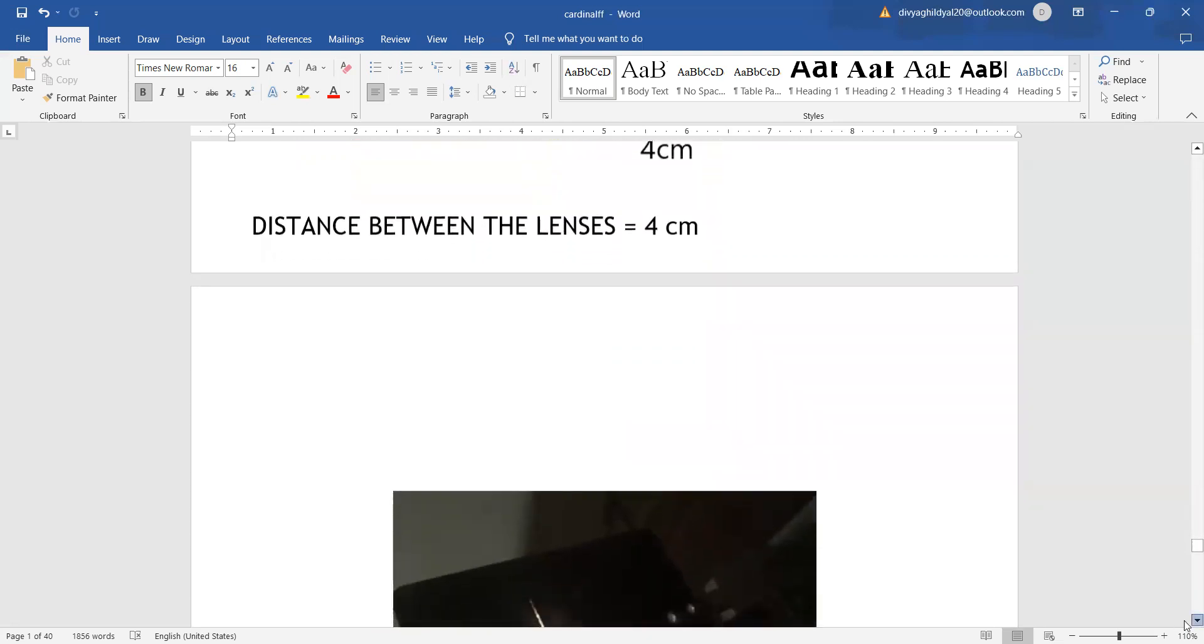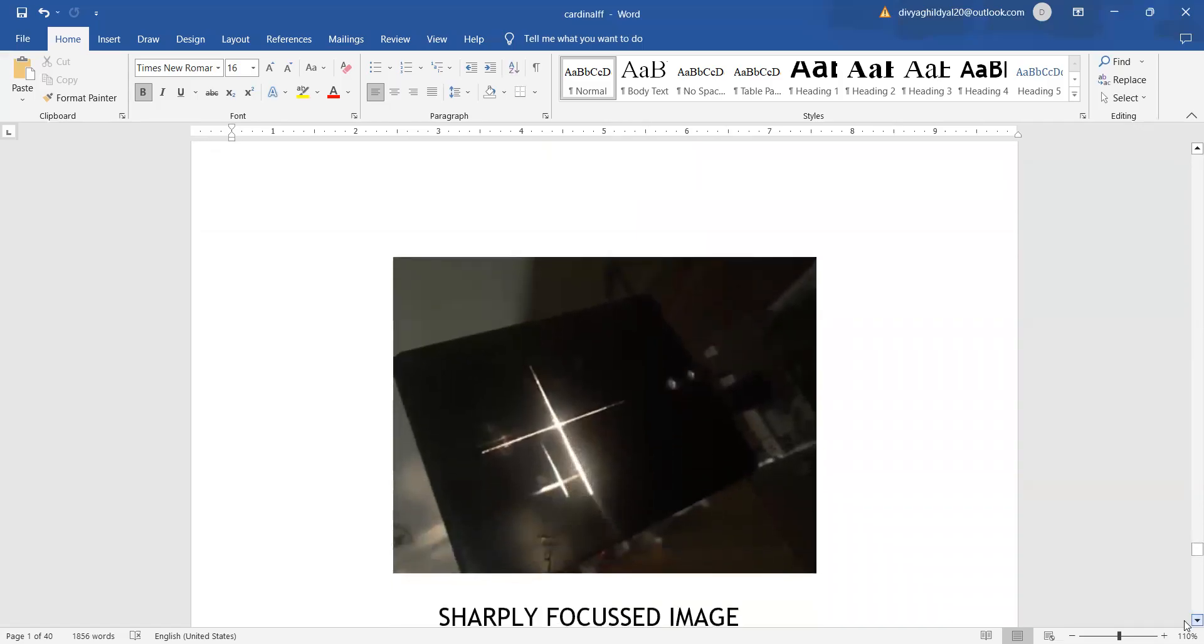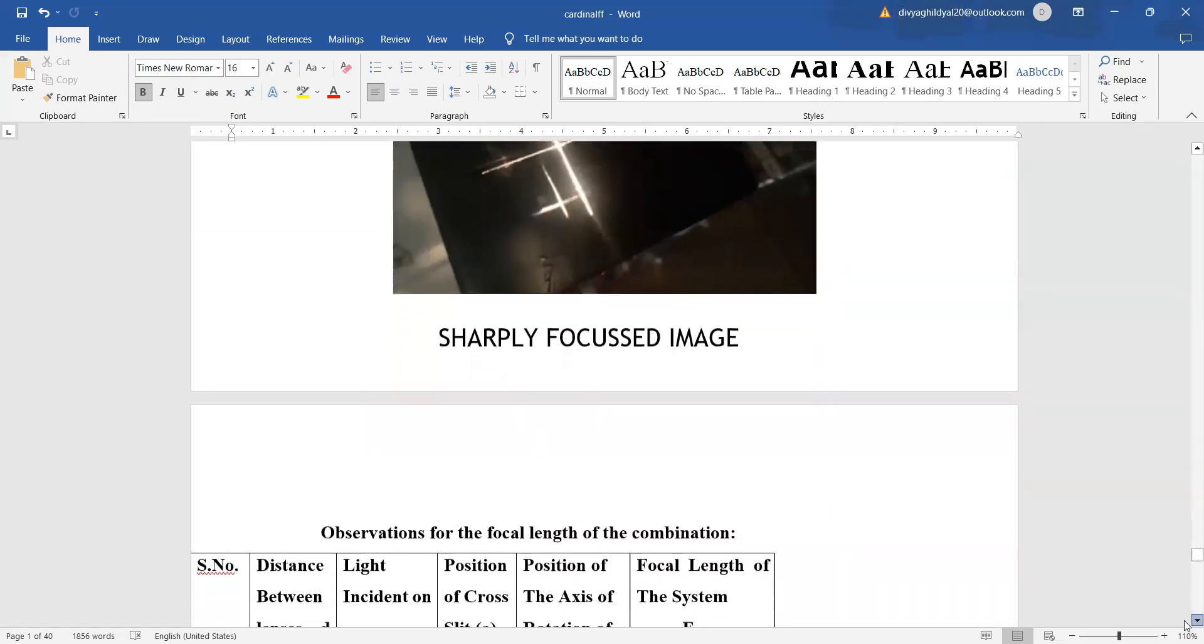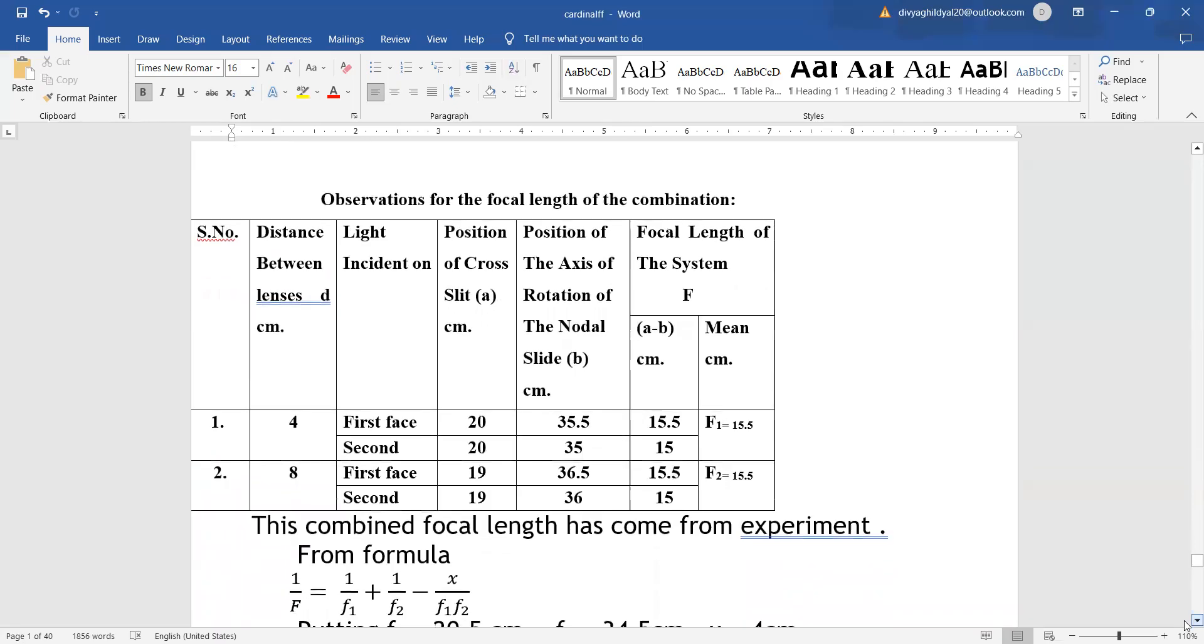Then again, we will focus and get a very sharp image on the cross slit. Immediately, we will take the readings. The distance between the lenses, we will take for two cases: 4 cm and 8 cm. When light is incident on the first and second faces, we will take the readings and their difference will give the focal length.